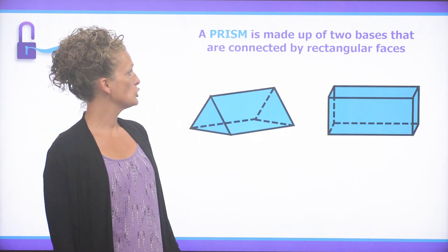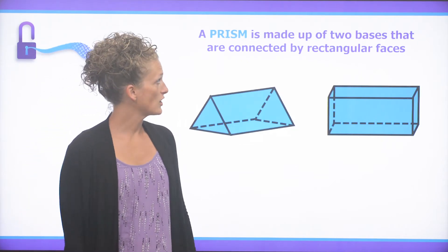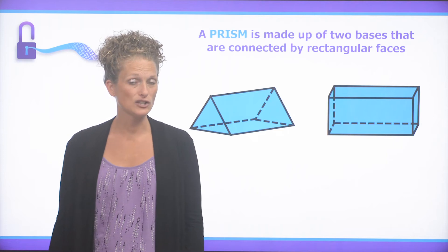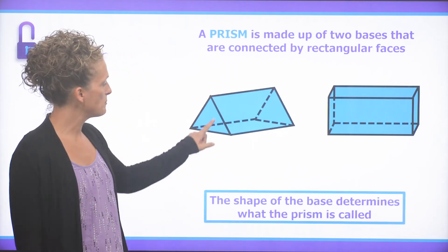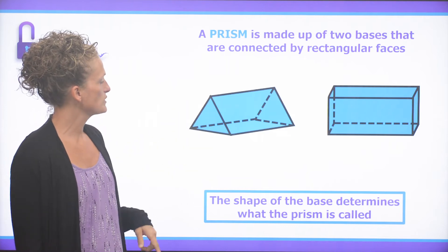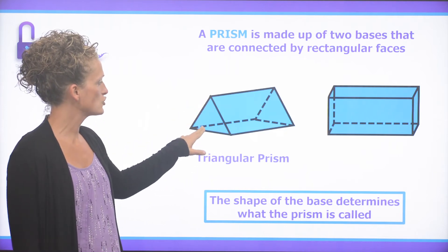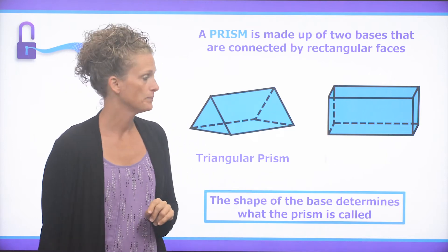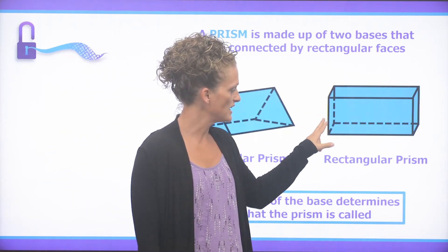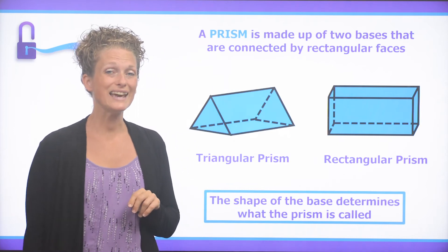A prism is made up of two bases that are connected by rectangular faces. That's an important thing to remember. So the shape of the base determines what the prism is called. And this one has a triangle base, and so it is called a triangular prism. This one has a rectangle base, so it is called a rectangular prism.